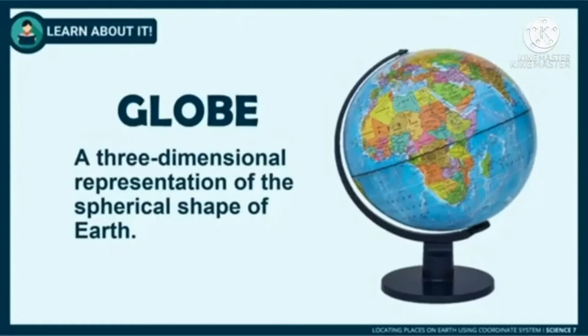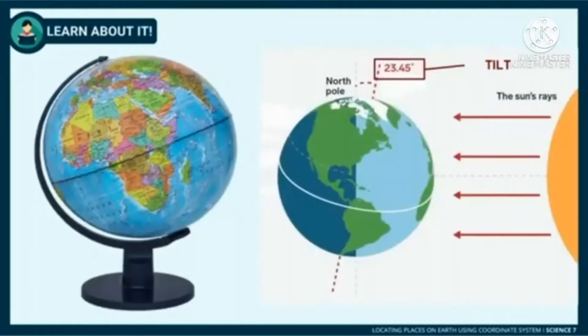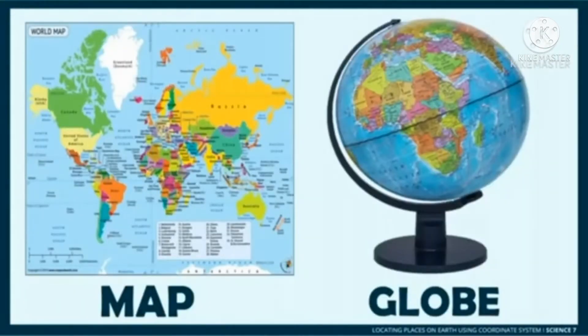On the other hand, a globe is a three-dimensional representation of the spherical shape of the Earth. A unique feature of a globe is Earth's tilt with respect to its north and south poles. It also represents Earth's position relative to the sun. Through time, both models have undergone modification to represent Earth better.